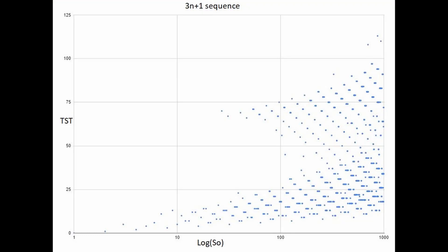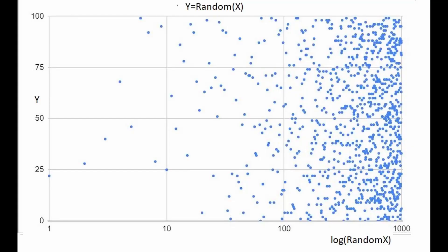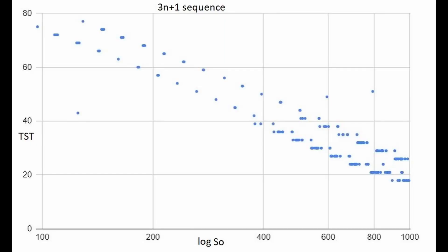The pattern looks even more organized if we plot the log of S0 versus TST, as you can see on the graphic. The TST values tend to line up along approximate straight lines with a strong negative slope and other approximate straight lines with a positive slope. Here is an example of just two lines with a negative slope for the 3N plus 1 sequence of log S0 versus TST, as you can see there.